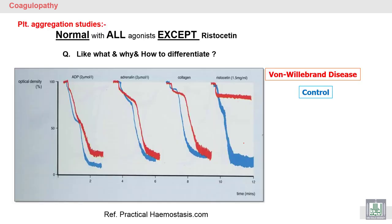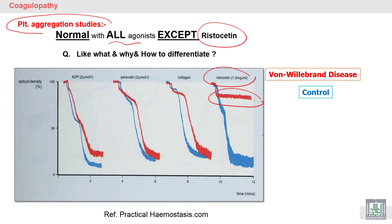Von Willebrand factor is an important protein responsible for the adhesion of platelets to subendothelial microfibers. In platelet aggregation studies, we see a picture similar to Bernard-Soulier syndrome: normal aggregation with all agonists except ristocetin. With ristocetin, there is no aggregation or a defect in aggregation, while aggregation is normal with other agonists.